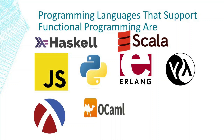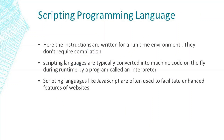Programming languages that support functional programming include Haskell, Scala, JavaScript, Python, Erlang, Lisp, Racket, and OCaml. Many of you might not have heard of certain programming languages here, but they do exist, and many of you might be using them for daily purposes. Scripting programming language — here, the instructions are written for a runtime environment and they don't require compilation.